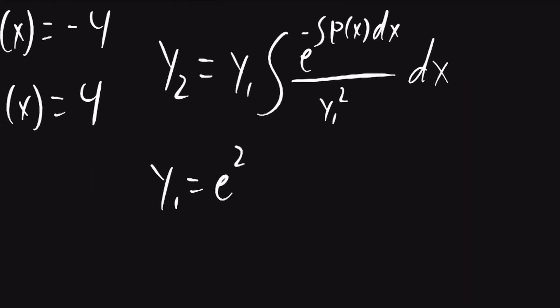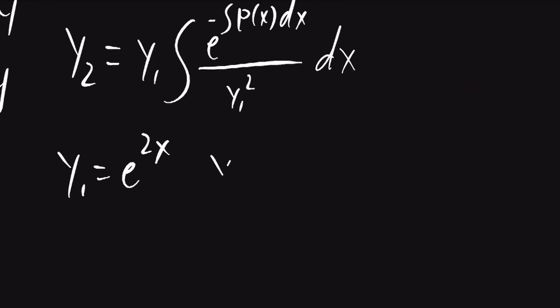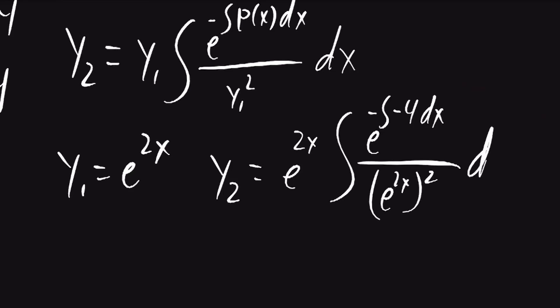y1 was given as e to the power of 2x, so I can write that into the formula. y2 will be equal to e to the power of 2x times the integral of e to the negative integral of negative 4 dx over e to the 2x squared. All that will be with respect to x.